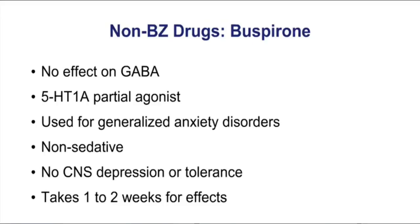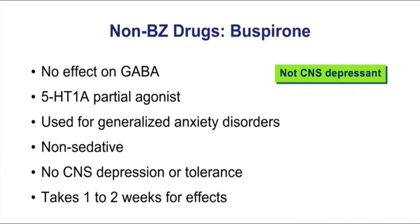The final drug in this chapter is a non-benzodiazepine drug called buspirone. This drug is very different from all of the other drugs covered in this chapter — it's the only drug in the chapter that's not a GABA drug. In fact, this drug is a serotonin drug; it's a 5-HT1A partial agonist. Because it's a serotonin drug and not a GABA drug, it's not a CNS depressant. It can be used for generalized anxiety disorders. It doesn't have sedative effects, you don't get CNS depression or tolerance. The downside is that it takes one to two weeks before it starts to work — it has a slow onset.